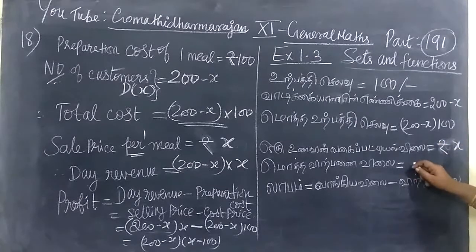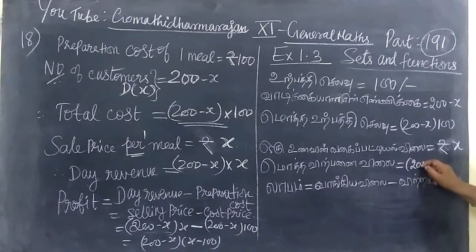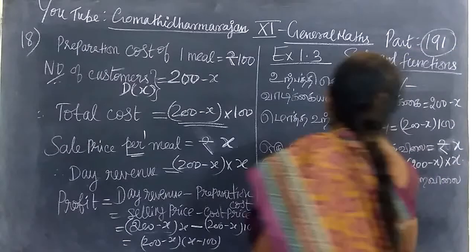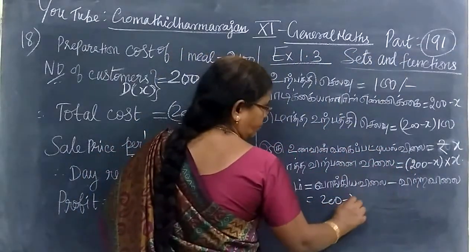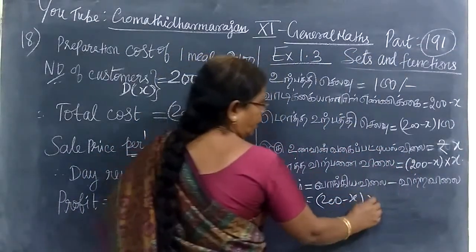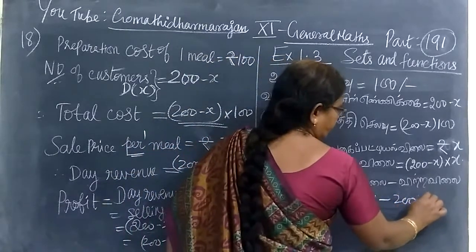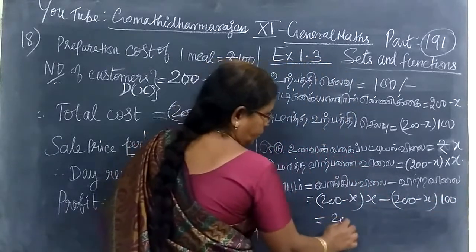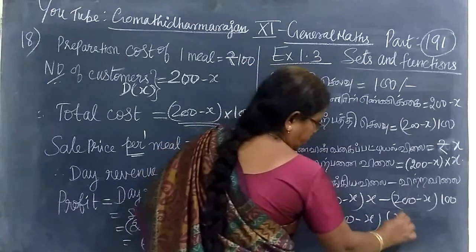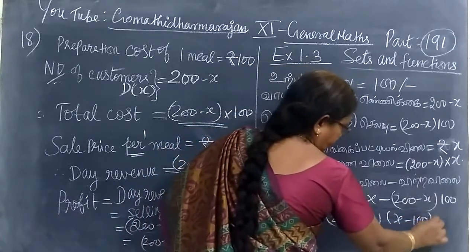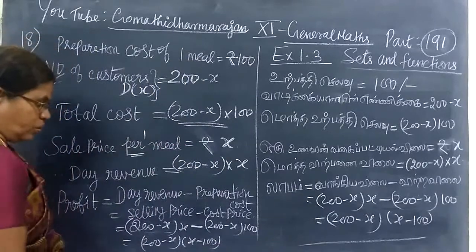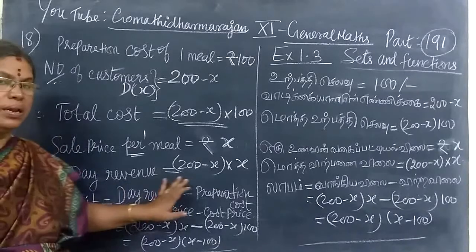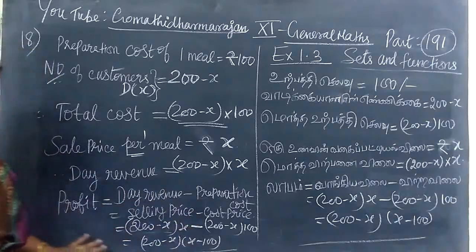When the number of customers increases, the interest changes. This is x minus hundred, the number of meals prepared. Preparation cost minus selling price equals profit.